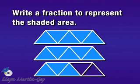Notice in this figure, we have three whole figures, so we have three whole pieces. Each of these is divided into five triangles of equal area. So because of that, the number of equal parts in a whole is five. That means our denominator is five.